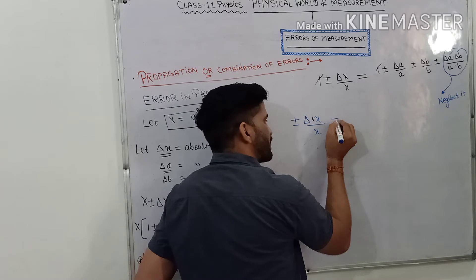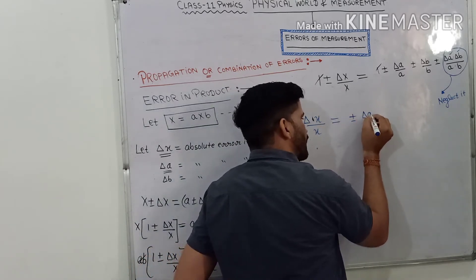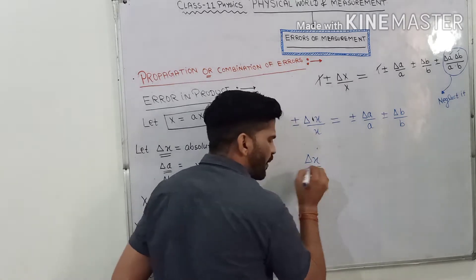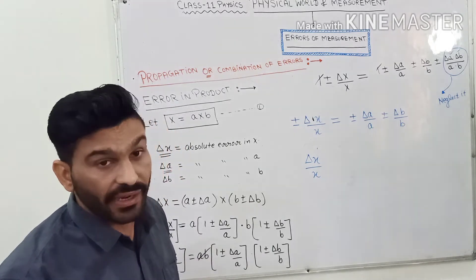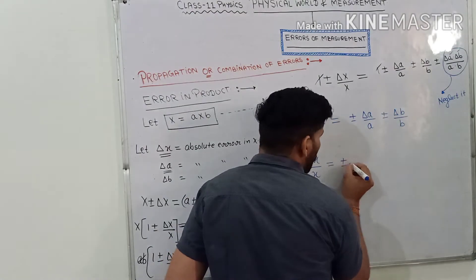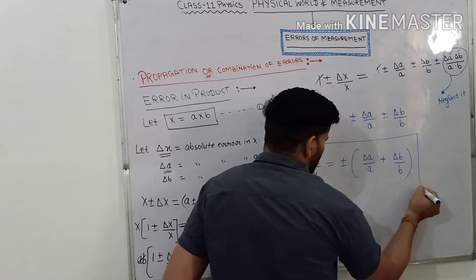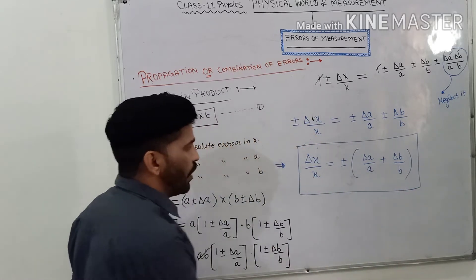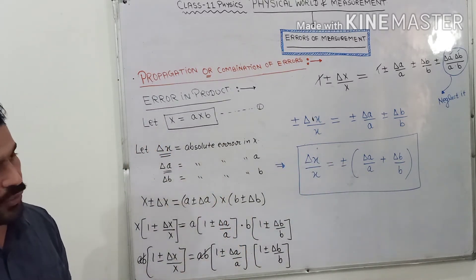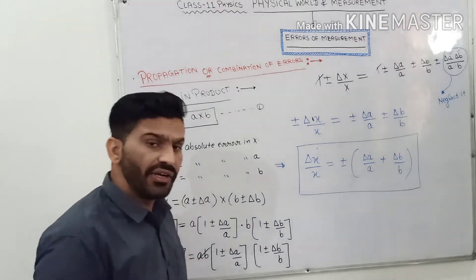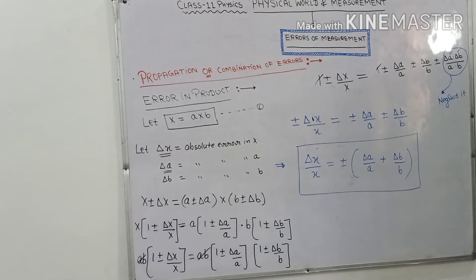After neglecting higher-order terms, we get plus minus delta x divided by x equals plus minus delta a divided by a plus minus delta b divided by b. When we divide absolute error by the mean value, we get relative error or fractional error. So: maximum relative error in x equals maximum relative error in a plus maximum relative error in b. Now after this, we move to error in division.